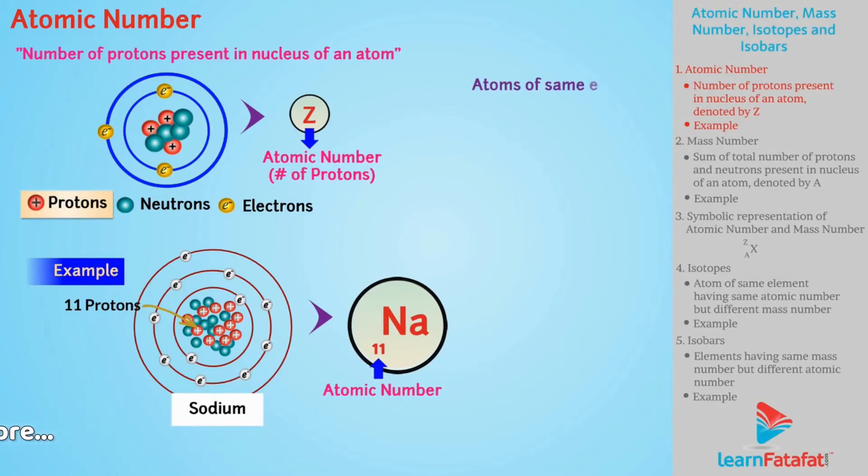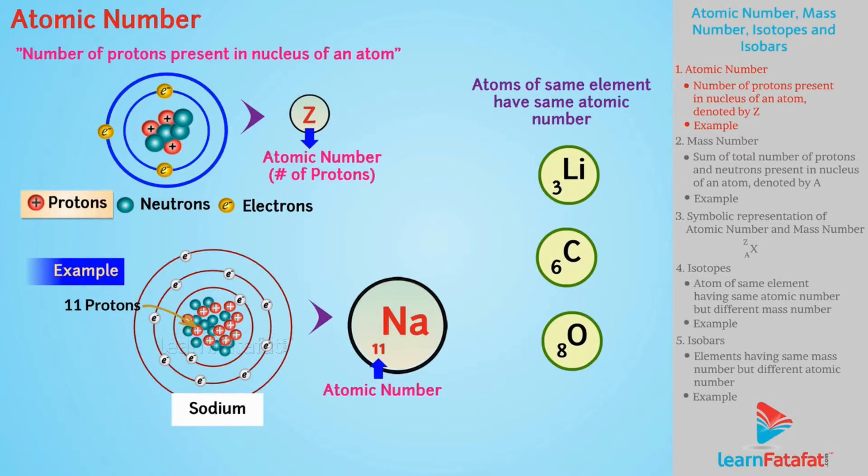Atoms of same element have same atomic number. For example, all atoms of sodium will have atomic number 11.